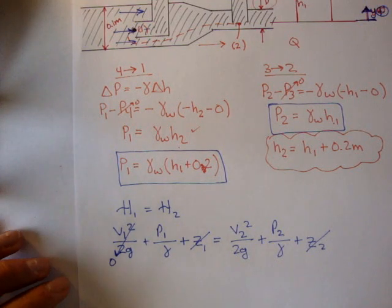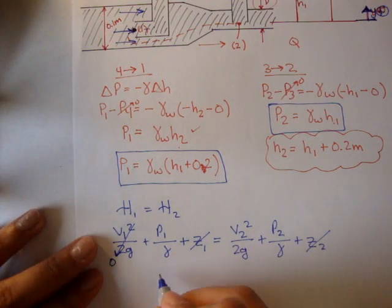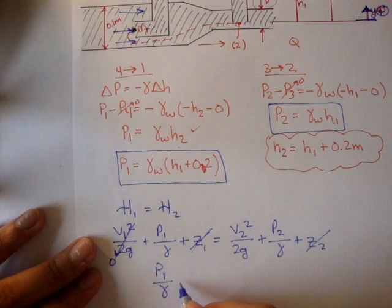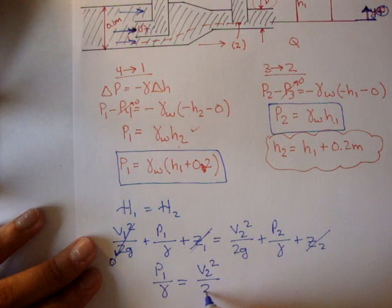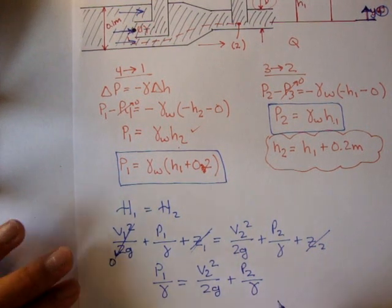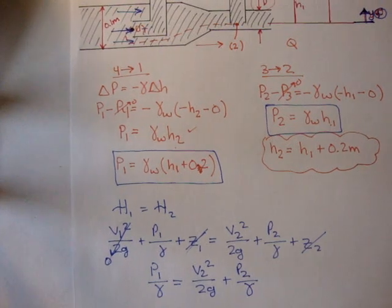Is there anything else we can cancel out? No, not for now. So what we're left with is pressure at one over gamma. That's gone. That's gone. Is equal to v2 squared over 2g plus pressure at two over gamma.